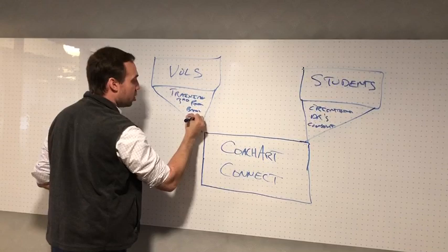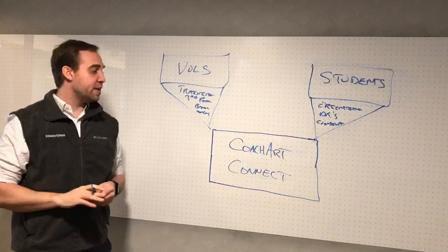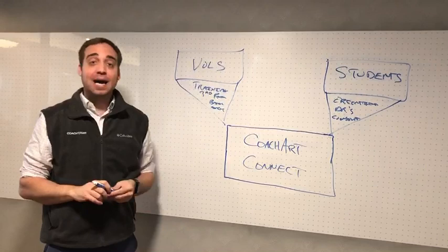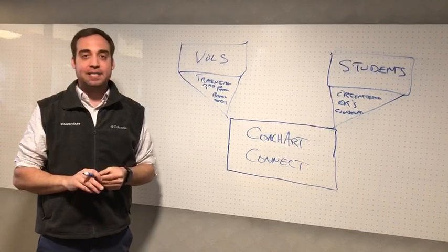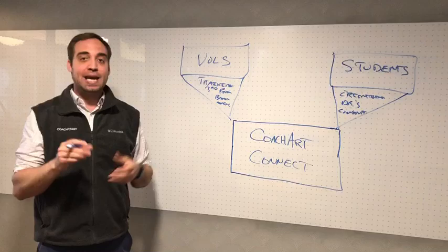Then they're able to log on to the platform and search the kids who live near their home or near their office, choose the child that they want to work with, click on that child, put in the times that they're available, hit submit, and that child's parent will instantly get a text message saying this volunteer can come to your home and work with your child. Then they hit agree and they've locked into a match.